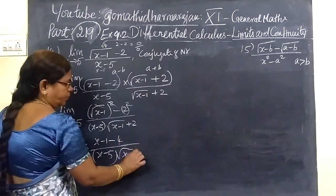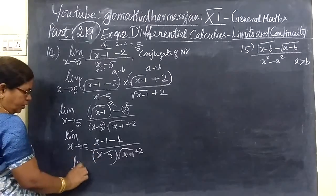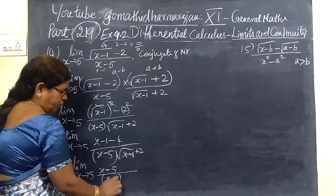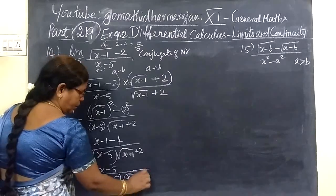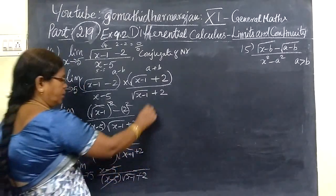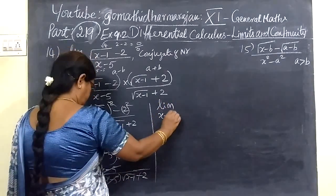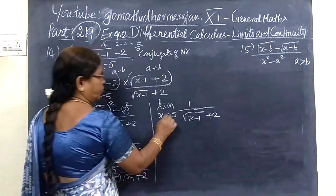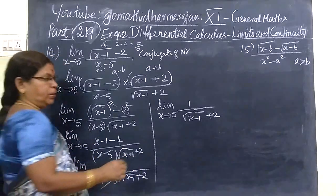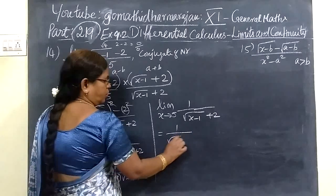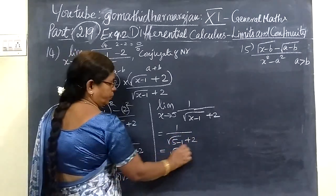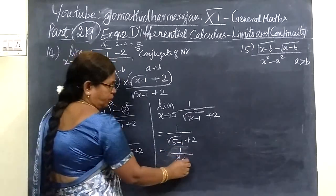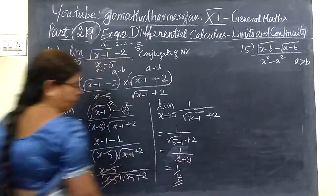So X minus 5, minus X minus 5, root of X minus 1 plus 2, so now this will be canceled. Again the limit X tends to 5, 1 by root of X minus 1 plus 2. Now you can apply the limit. When you apply the limit, the limit will be over. So 1 by root of 5 minus 1 plus 2. So this is 1 by 5 minus 1, 4, root of 4 is 2. So the answer for this is 1 by 4.